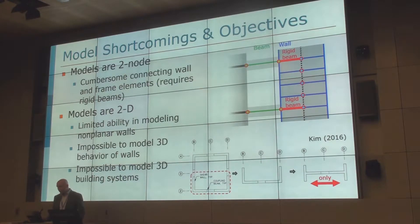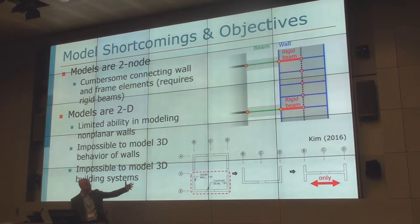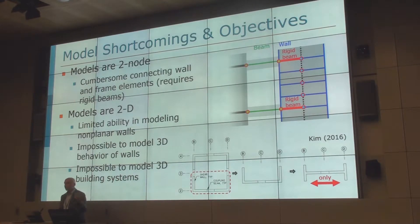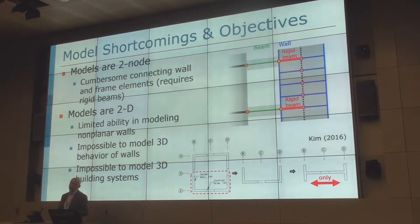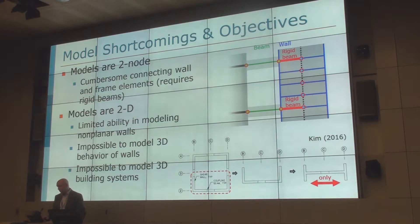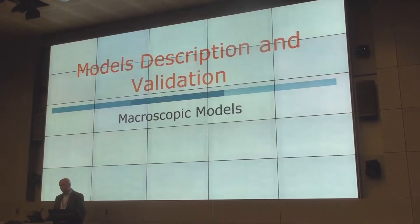And if you want to model non-planar walls, for example, people usually simplify a core wall into something like a T-section, and you can really load that only in two dimensions. So obviously there are limitations to these models in terms of how we extend them and use them for the actual building system — how do we connect beams to it — and you cannot really model three-dimensional behavior with these original models currently in OpenSees.